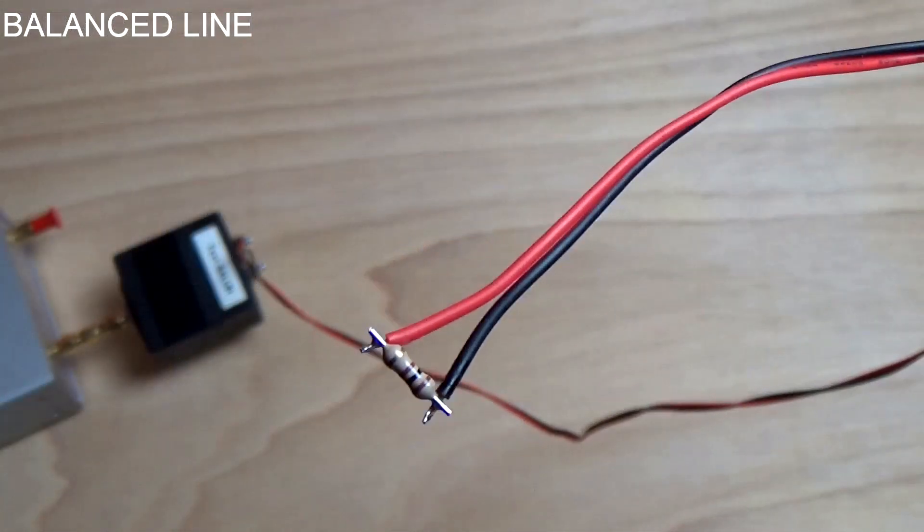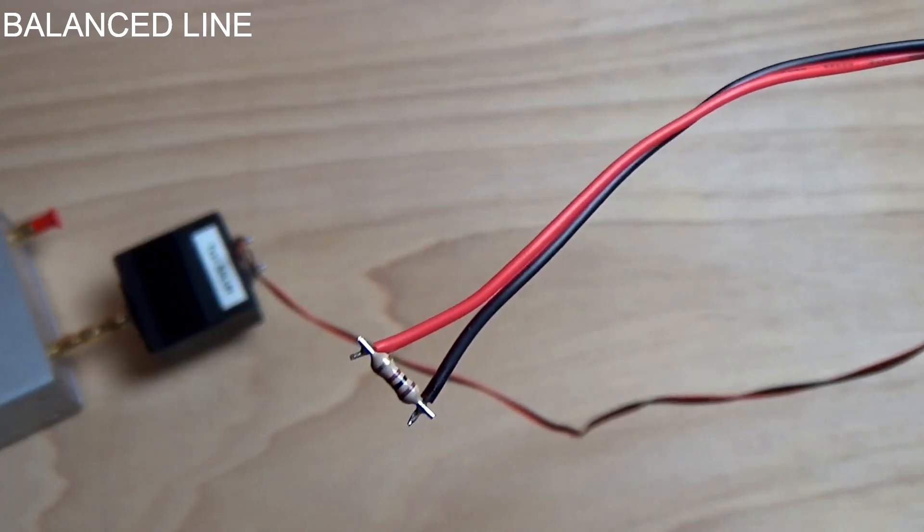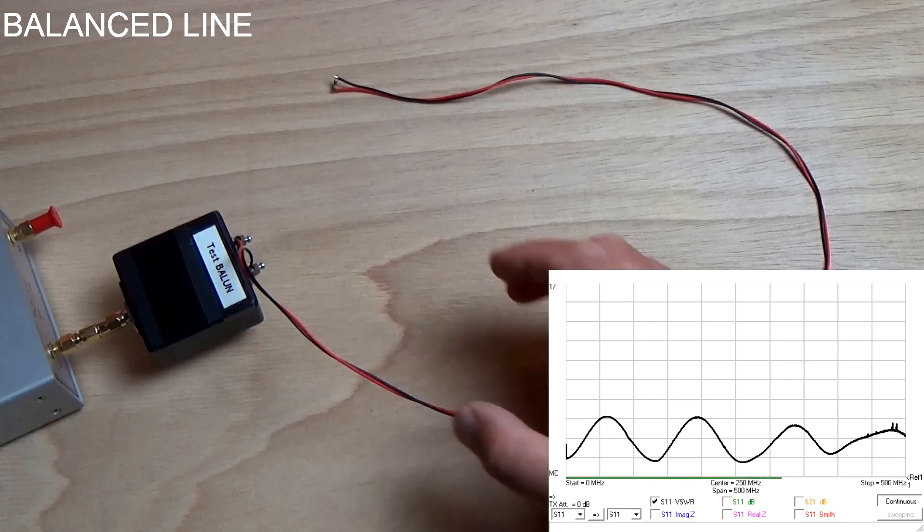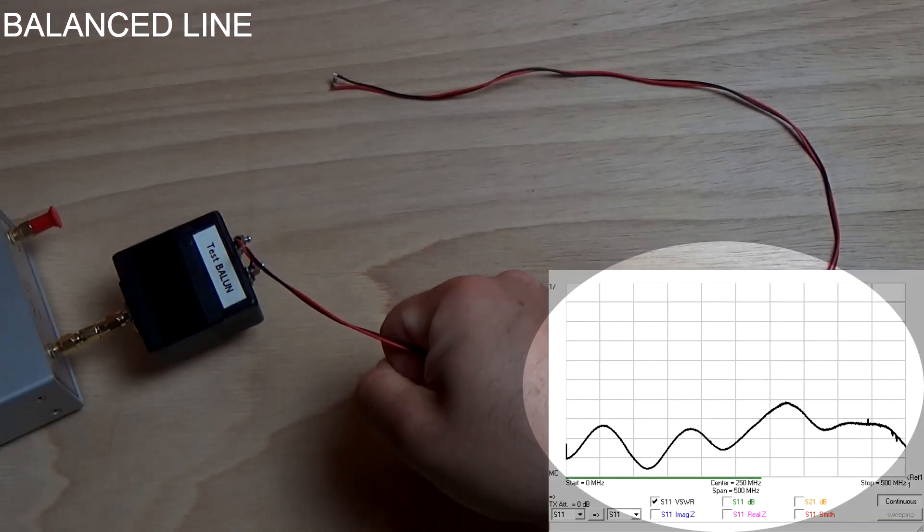To see the difference between a balanced and an unbalanced line, we can begin with a balanced line terminated with a resistor. I connected the line to my network analyzer. If I touch the line, the impedance read by the VNA changes.